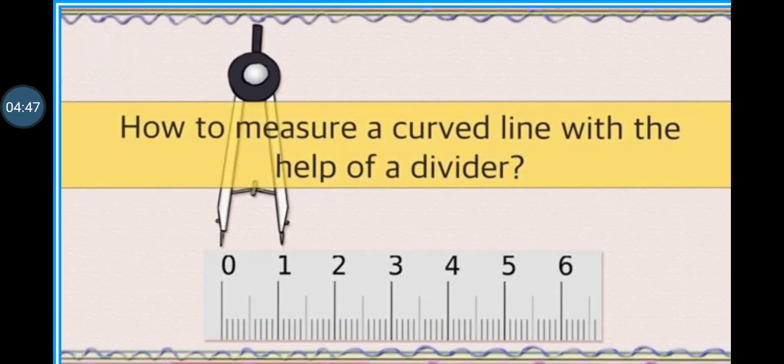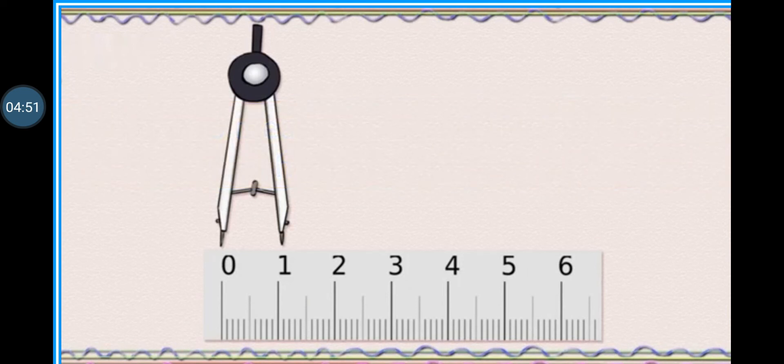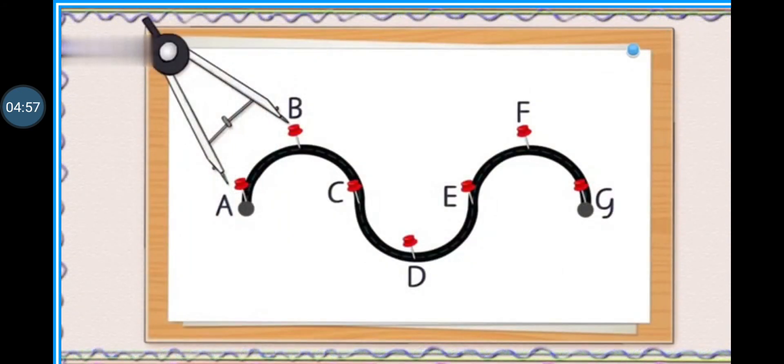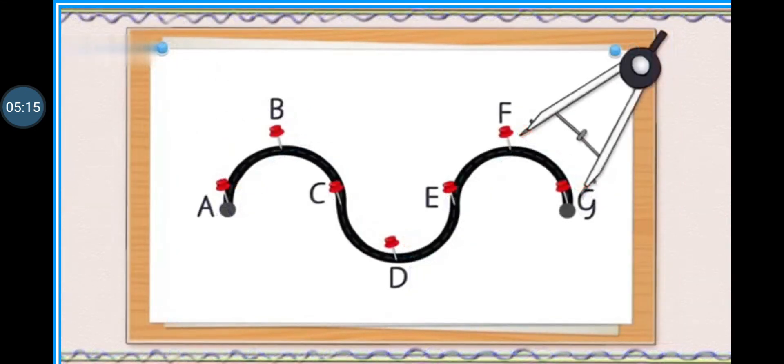Do you want to learn how we can measure the curved line with the help of divider? We can measure arms of divider up to 1 centimeter and place the divider on the marked edges of the curved line and move it accordingly. From A to B, B to C, C to D, D to E, E to F and F to G.